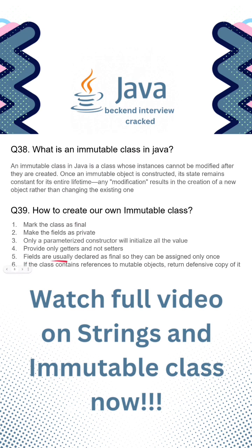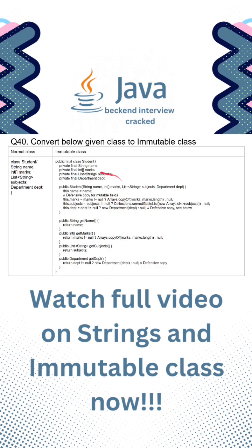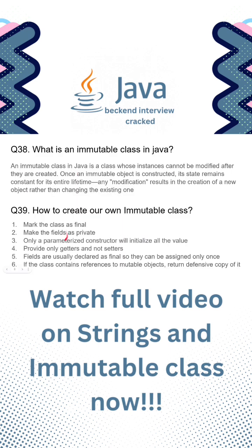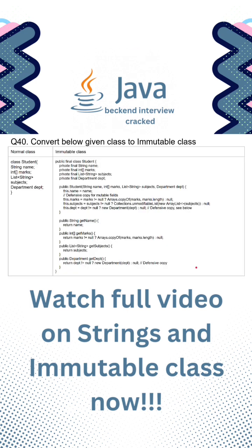Fifth, fields are declared as final — we can see the fields are already declared as final. Sixth, if the class contains references to mutable objects, we must return a defensive copy of them. Here we can see a defensive copy is returned which cannot be changed, and again a copy where we use the current object as a copy constructor to initialize a new object.